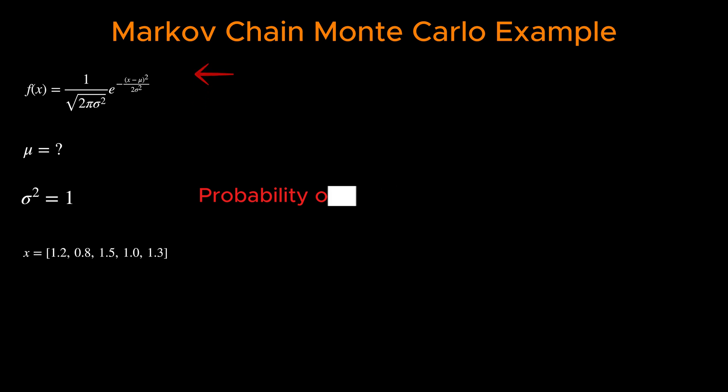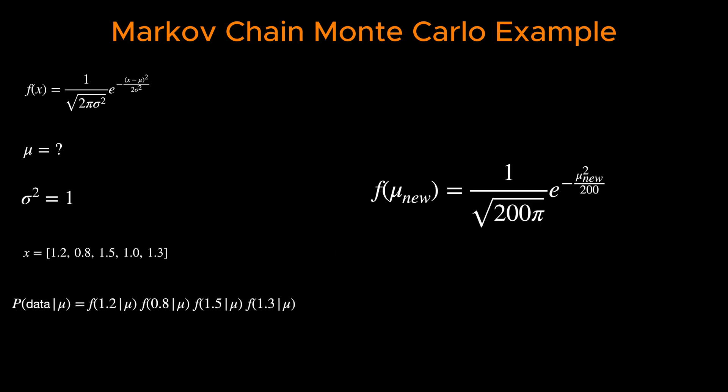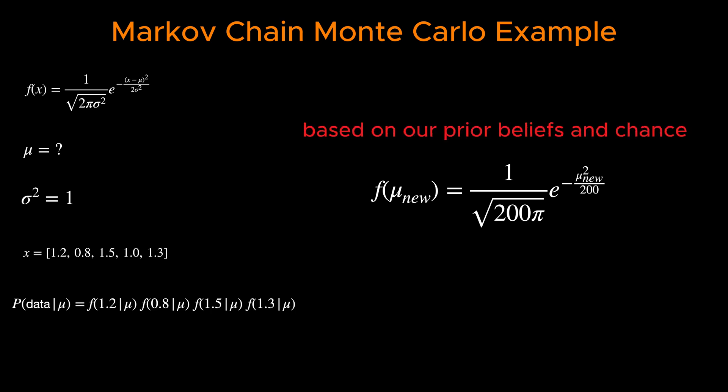Since our data points are independent, we can find the probability of the data set by multiplying the probability of each of the data points. This is known as the likelihood. We also use the Monte Carlo method to generate μ samples from a Gaussian distribution with a mean of 0 and variance of 10.